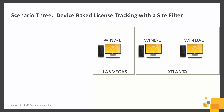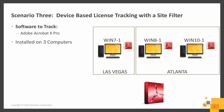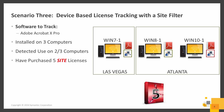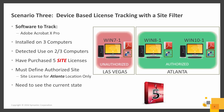In this demonstration, we will show device-based license tracking with a site filter to emulate a site-based license. We will be tracking Adobe Acrobat 10 Professional, installed on three computers with usage detected on two out of three. We have purchased five licenses based on a site entitlement. We will define authorized sites — in this case the Atlanta location only — and we would like to see the current state.